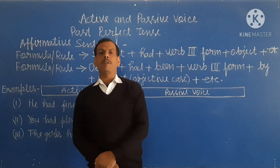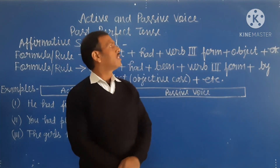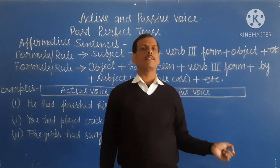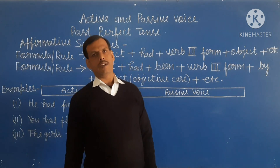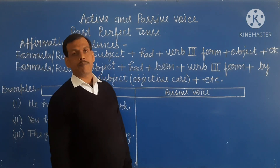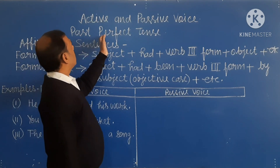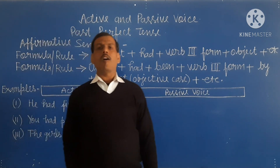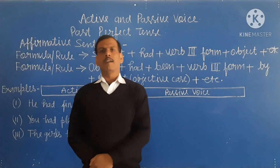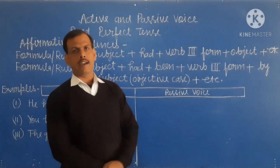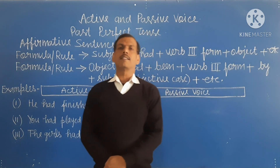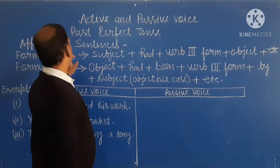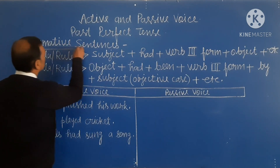Dear students, in previous lessons we have already completed the present perfect tense — affirmative sentence, negative sentence, interrogative sentence, and interrogative negative sentence. After present perfect tense, we have studied past perfect tense. Past perfect tense is also divided into four kinds of sentences: affirmative, negative, interrogative, and interrogative negative. In this lesson, we will study the affirmative sentence.